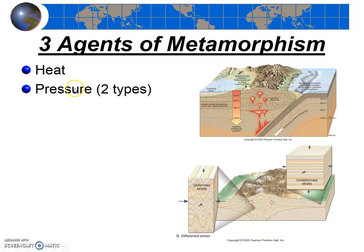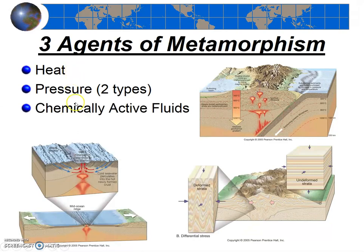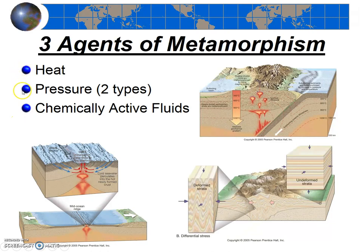So heat and pressure are the first two agents. There's another agent, however, that we sometimes call chemically active fluids, or hydrothermal fluids — basically hot water. Hot water can also cause alteration and metamorphism. Common places where we get hot water are faults and cracks on the ocean floor where magma is coming up and water is coming down. Notably, heat is present in all cases — if you're deep enough to have that much pressure, it's probably hot, and hydrothermal fluids are hot as well.